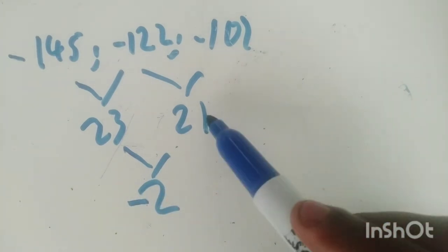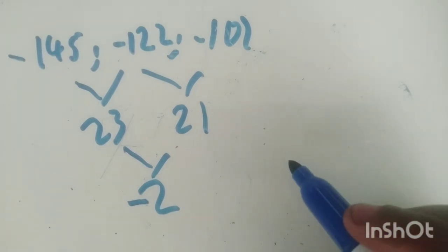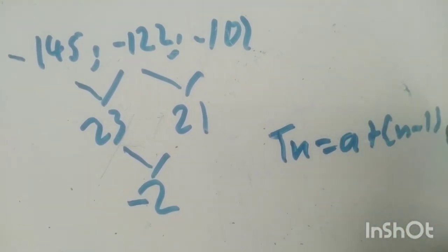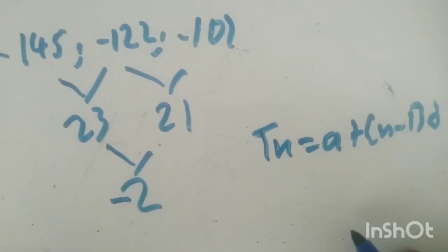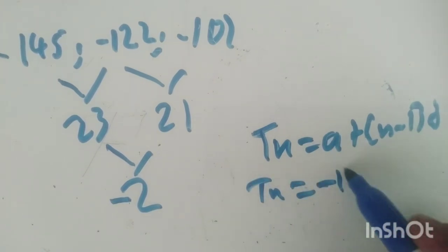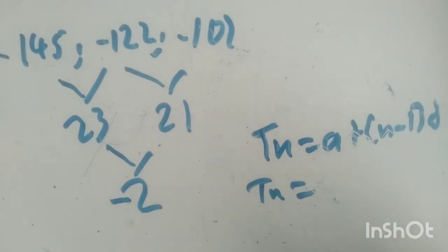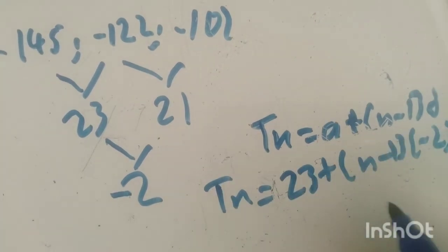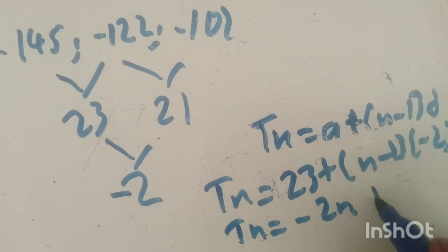The formula is Tn equals A plus (n minus 1) times d. So the formula will be Tn equals 23 — the first term of the first difference — plus (n minus 1) times negative 2, the common difference. This simplifies to Tn equals negative 2n plus 25.